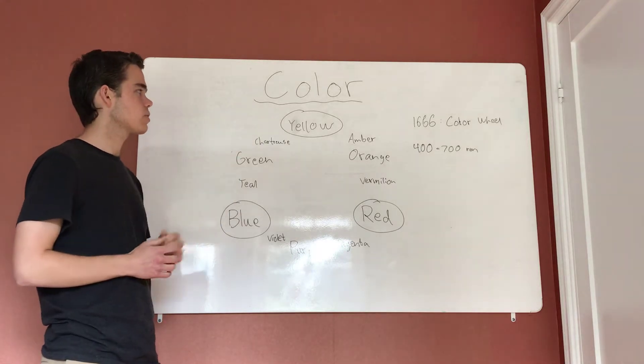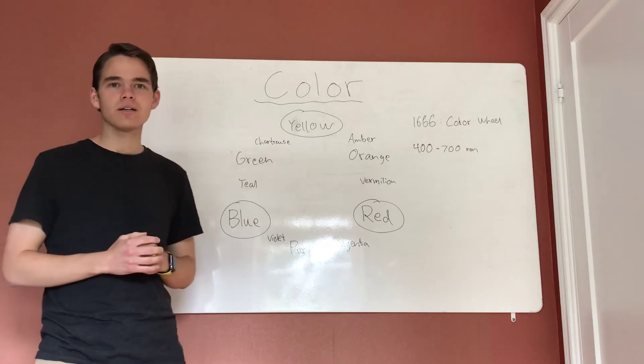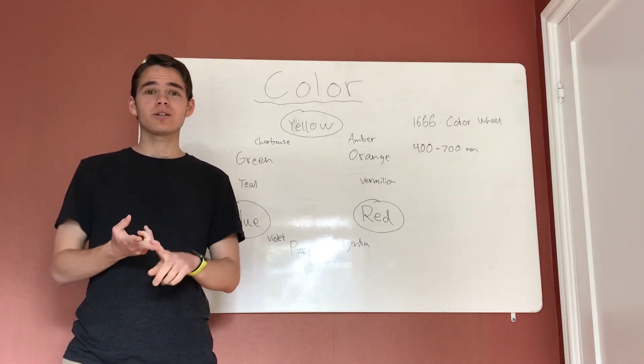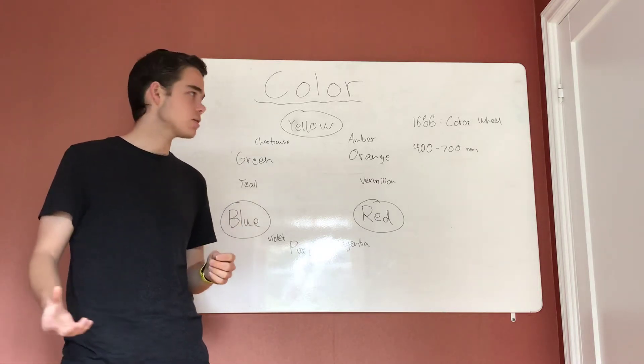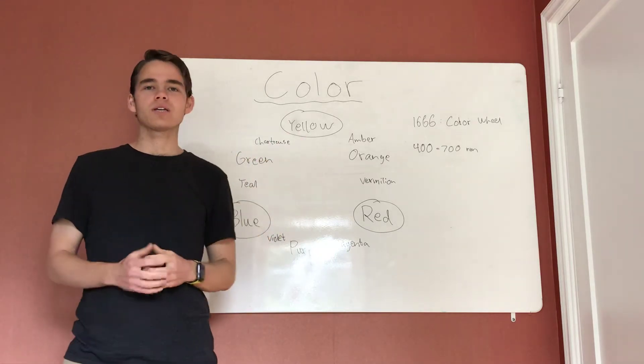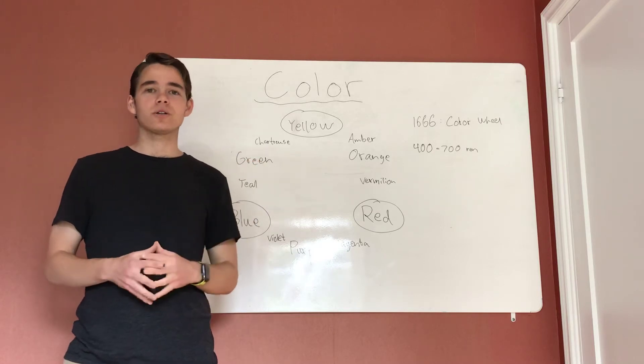So chartreuse, amber, vermilion, magenta, violet, and teal are all created by mixing one primary color with one secondary color. Of course, you can get more tertiary colors by mixing all three primaries and two secondary colors with each other, but those are just some of the tertiary colors.